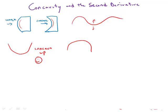If something is curving like this, then we call it concave down. And of course this is like a frown face.